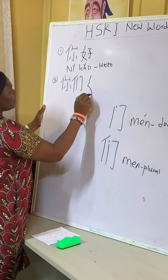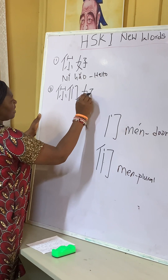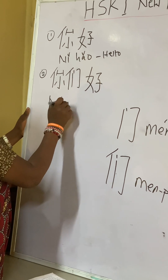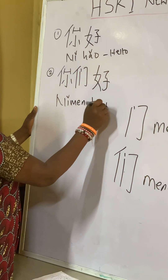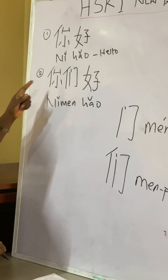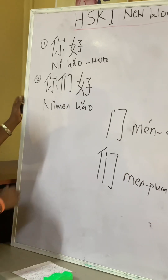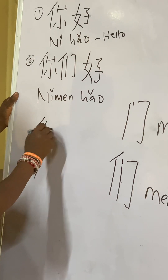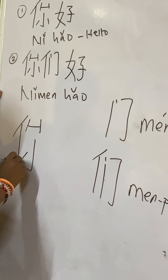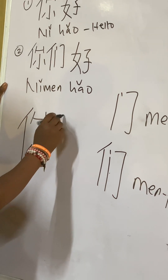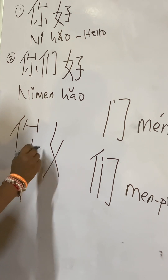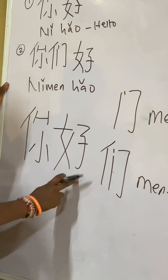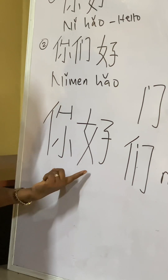So 你们好 (nǐmen hǎo) — 好 (hǎo) is still daughter plus son, which means good. 你们好 (nǐmen hǎo) means hello everyone. Let's write this one more time bigger: 你 (nǐ) with kumaradika and 小 (shall), then 好 (hǎo) with 女 (nǚ) and 子 (zǐ). So this is 你好 (nǐ hǎo).